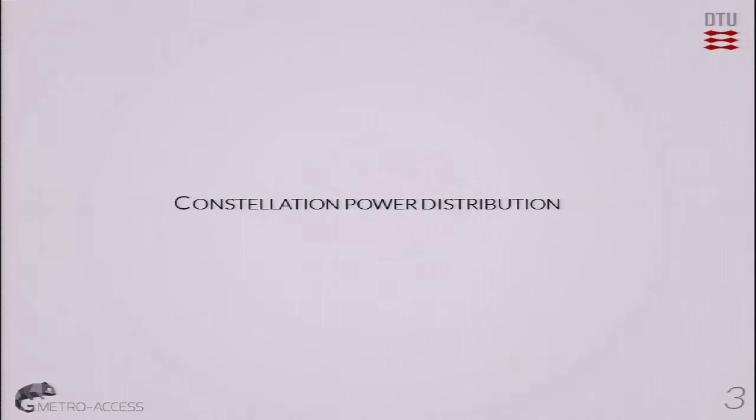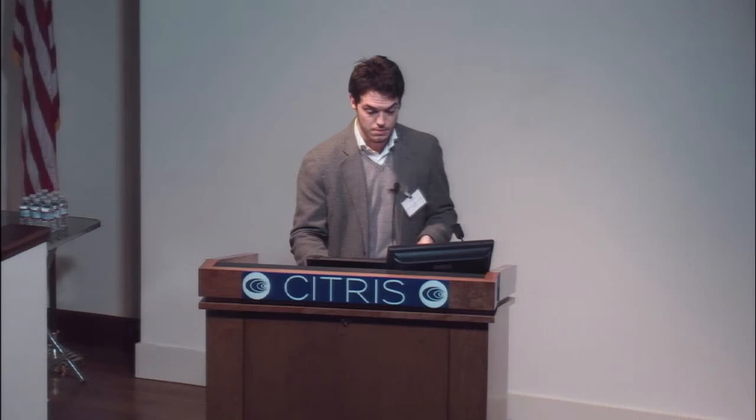The first problem is constellation power distribution — how the points in our constellation are located, and what is the probability of occurrence of each of these points. The goal here is to understand and see the limitations imposed by regular grid or uniformly distributed constellations like QAM on the achievable capacity, learn from these limitations, and apply the corresponding modifications on this distribution to approach and overcome them.